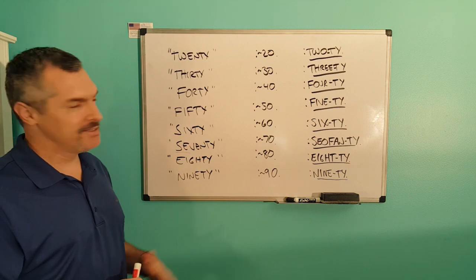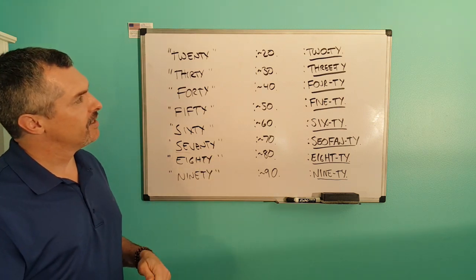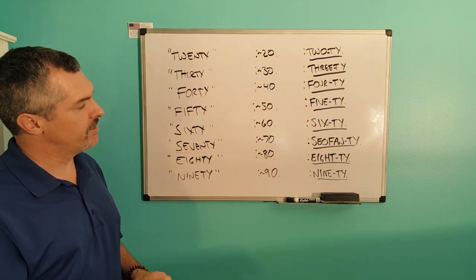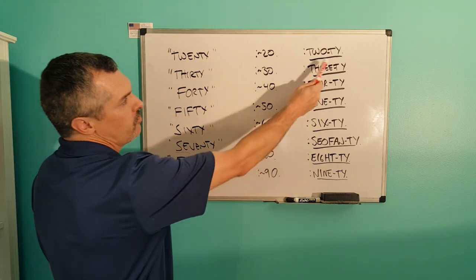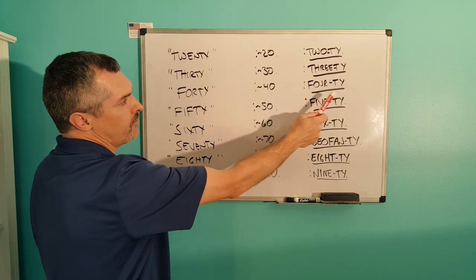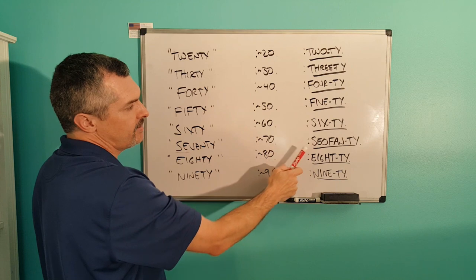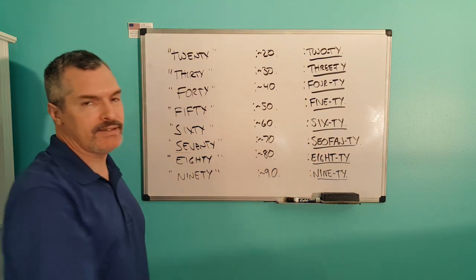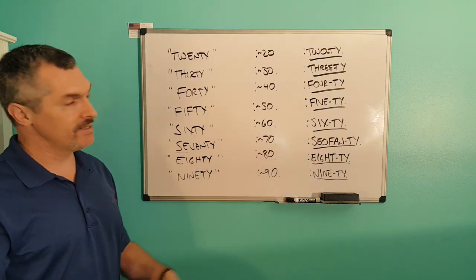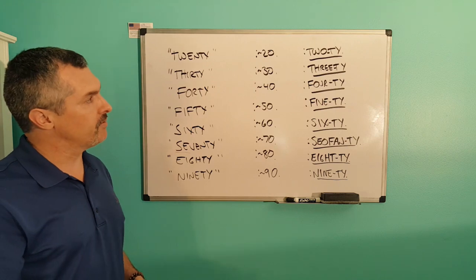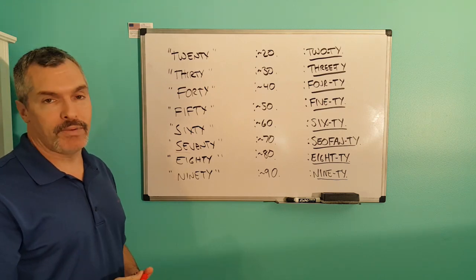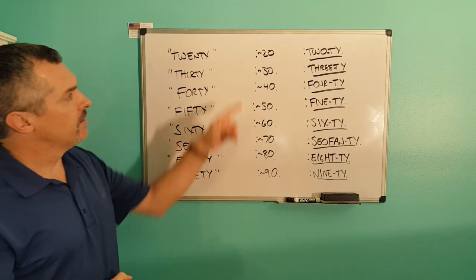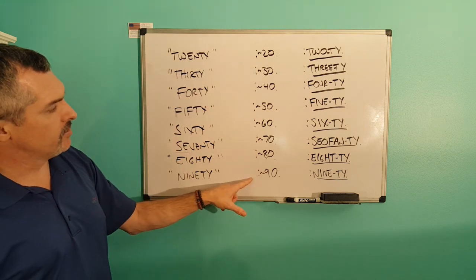So what I did was I quickly wrote these down over here. We have 2T, 3T, 4T, 5T, 6T, 7T, 80, and 90. Now they're consistent phonetically and spelling wise as compound facts. And they represent these numbers right here.